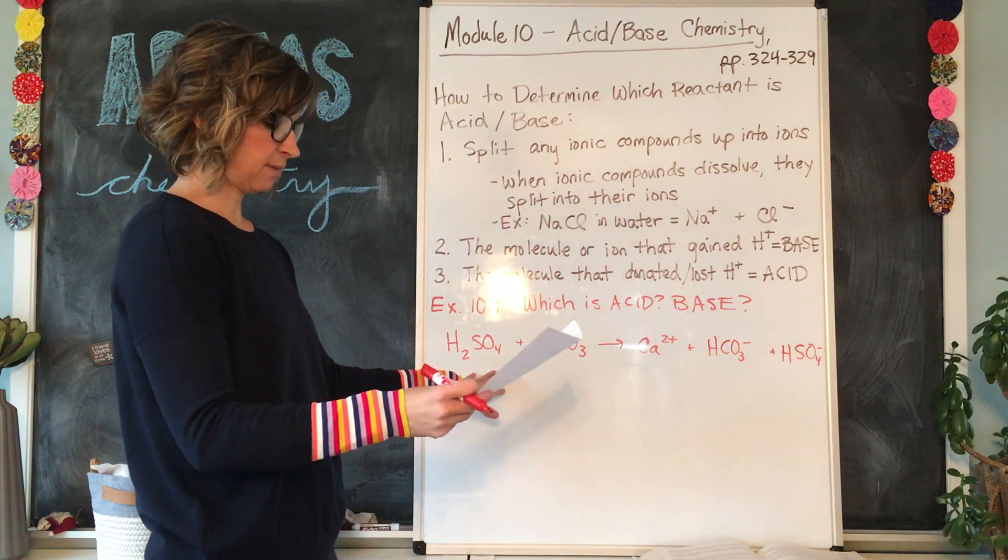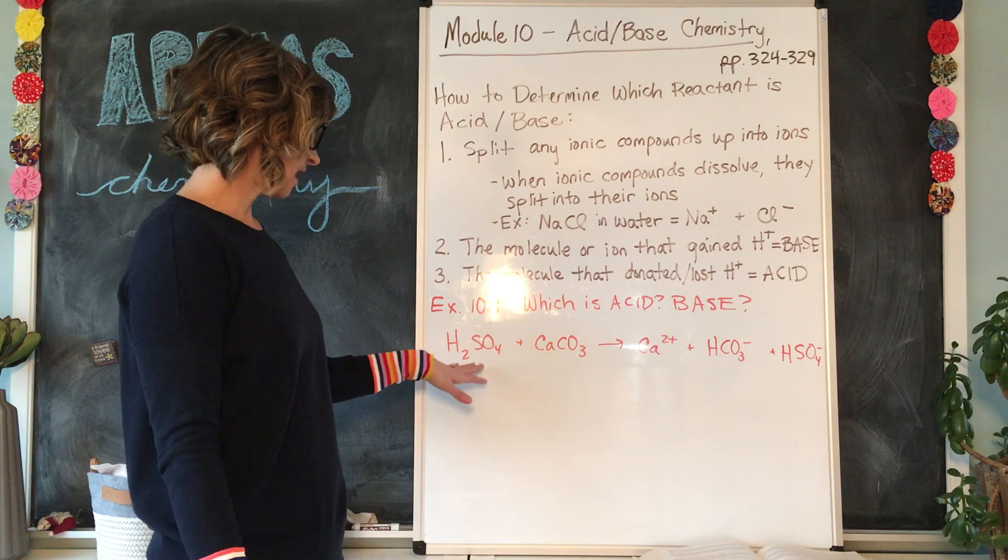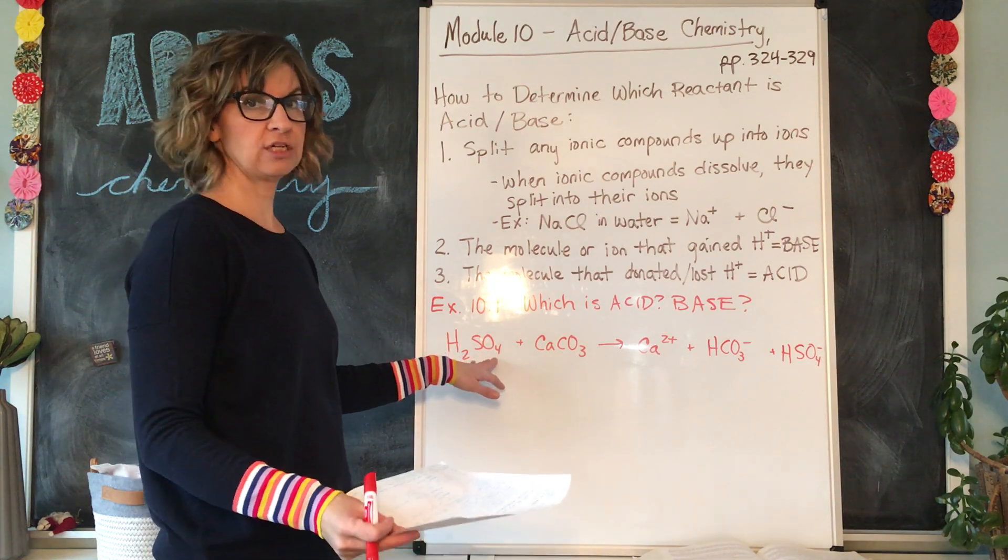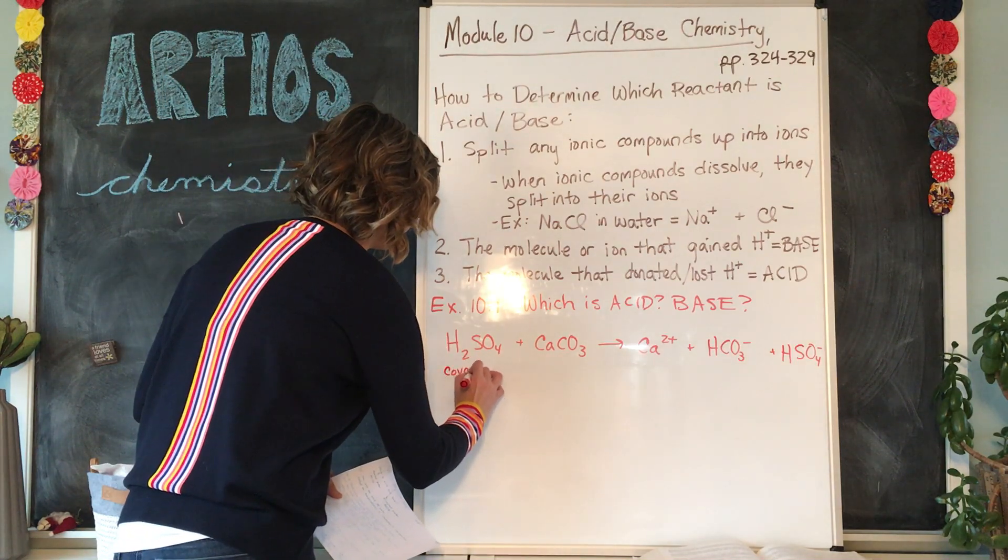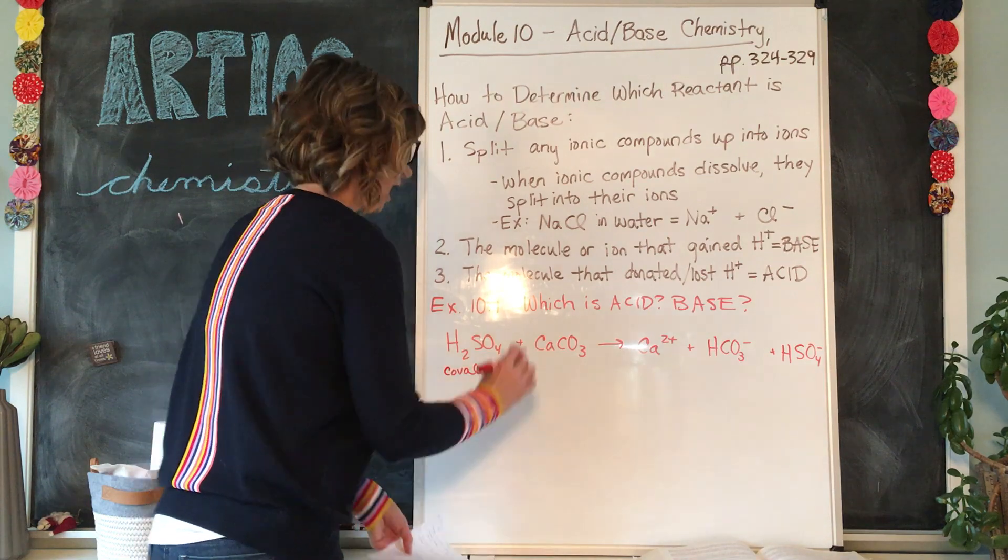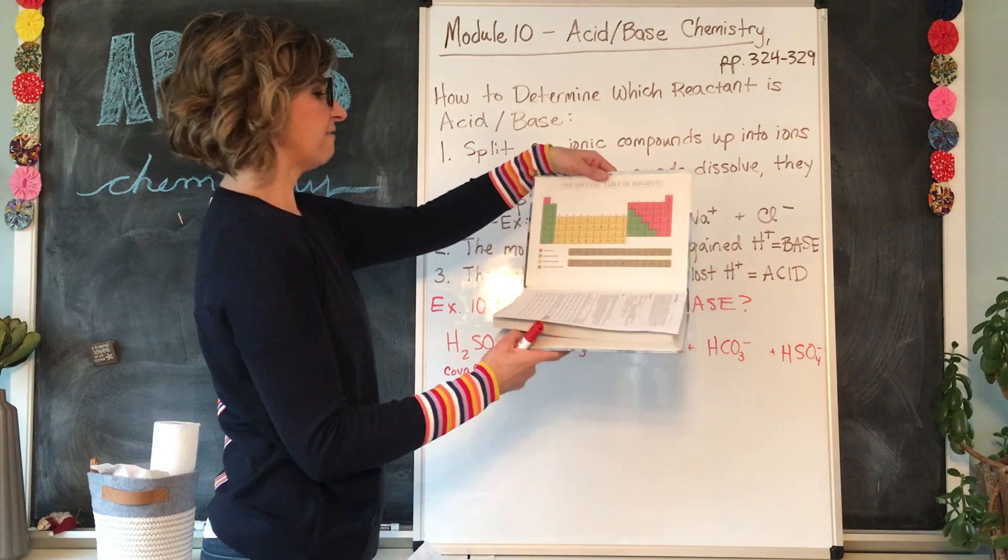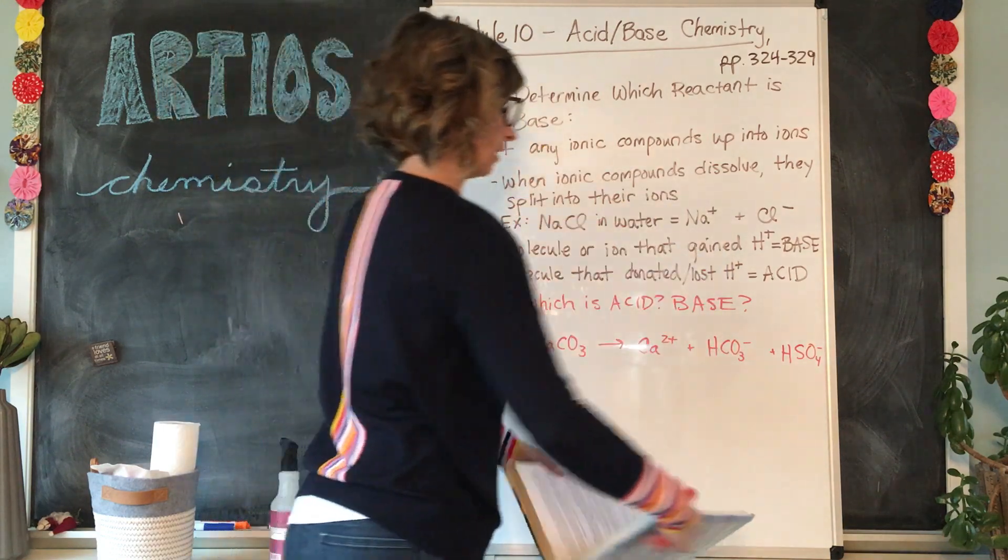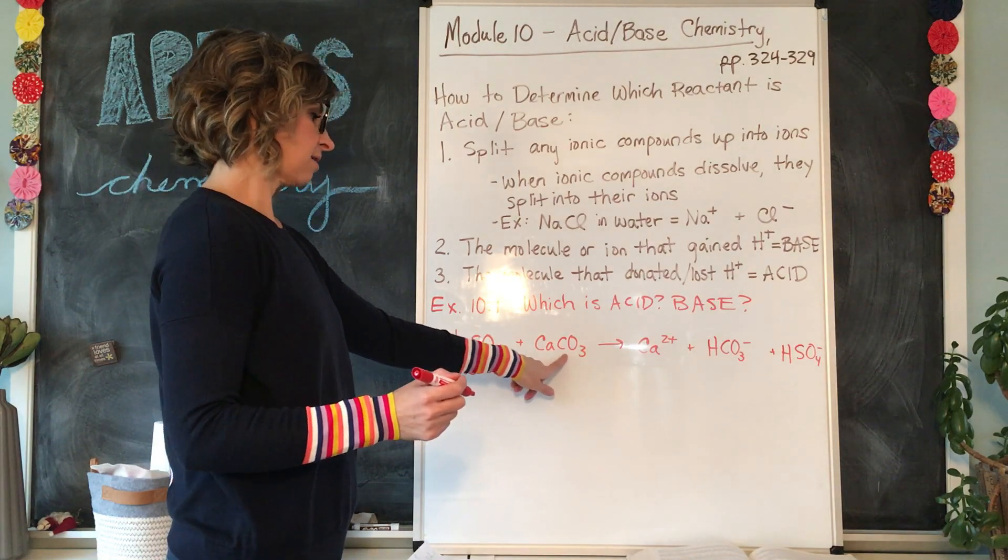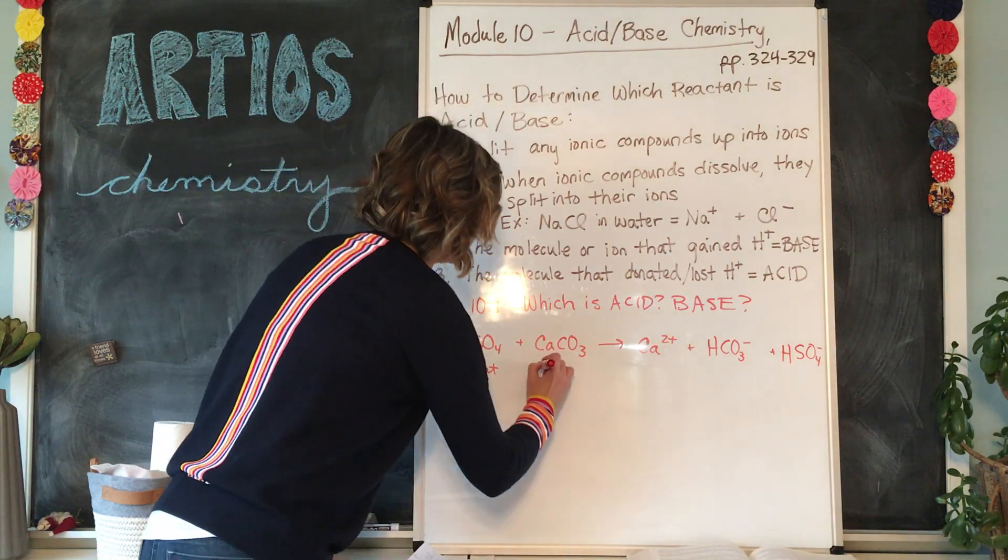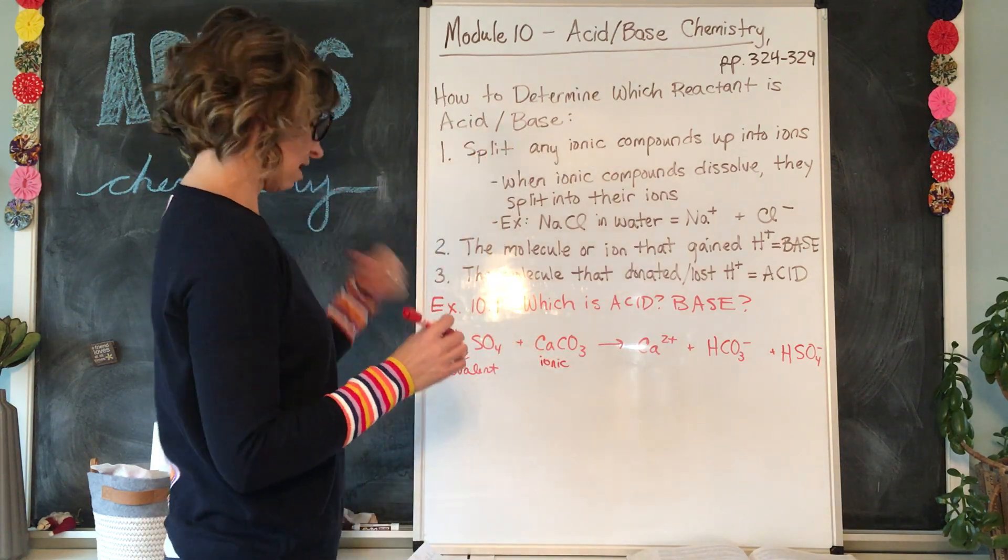Now if we look at our periodic table, we can see that hydrogen, sulfur, and oxygen are all non-metals. So this must be a covalent compound. However, calcium is to the left of the jagged line on our periodic table. So that would make it a metal. CO3 2-, those are non-metals, carbon and oxygen. So this one would be ionic.